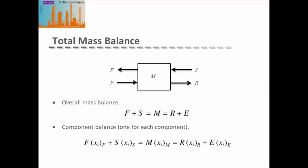For a single stage extraction system, we can produce a mass balance for the process. We know that the overall mass added in the feed and the solvent must be the same as that which comes out in our raffinate and extract products. This total amount is also the same as our mixed point total mass in the middle. We can also do this balance for each of the components.